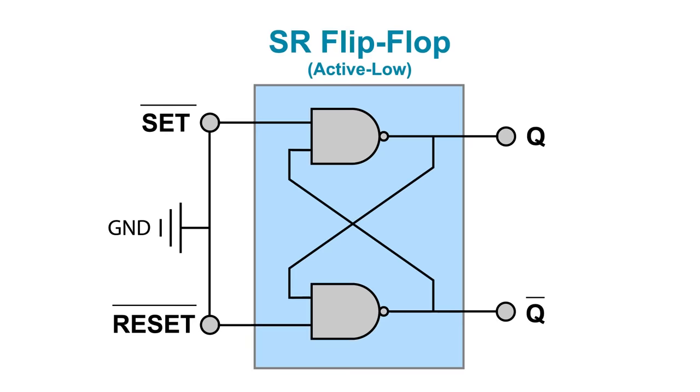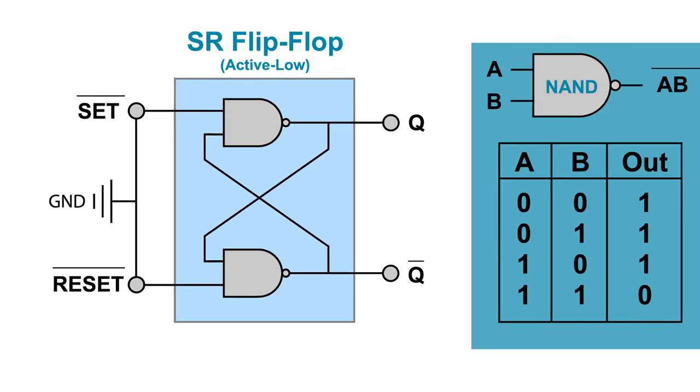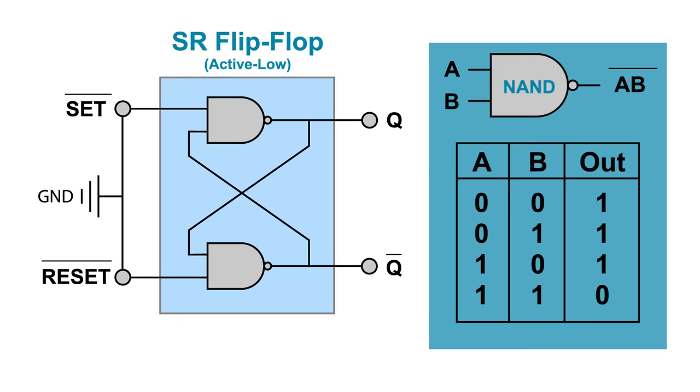First, let's take a look at the other type of SR latch, an active low flip-flop, this time made of two NAND gates. Remember that the output of a NAND gate is high, unless both inputs are high, making the output low.